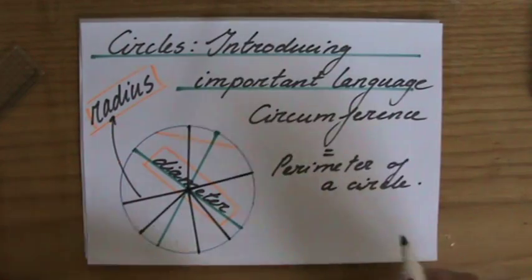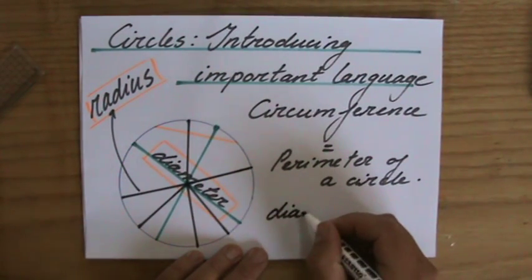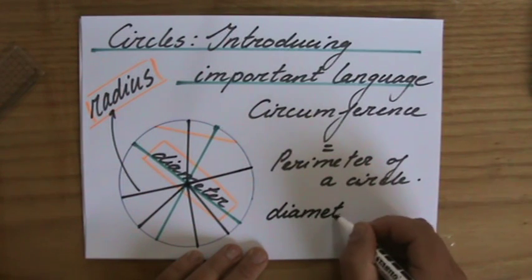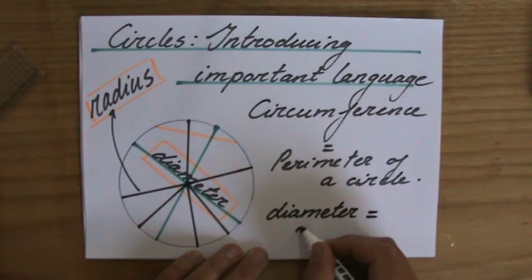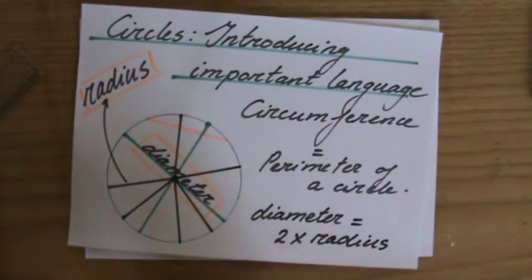Now there is one last thing I want to say. Do you agree that the diameter of a circle equals two times a radius? Do you agree with that?